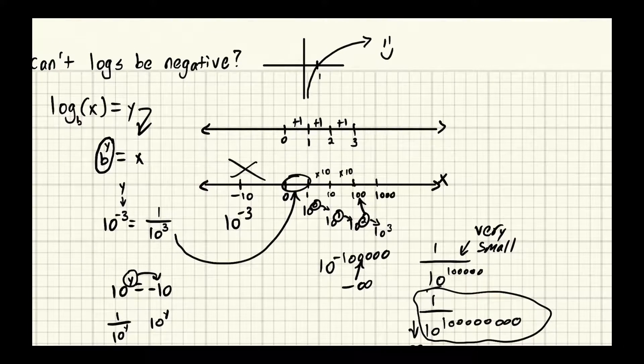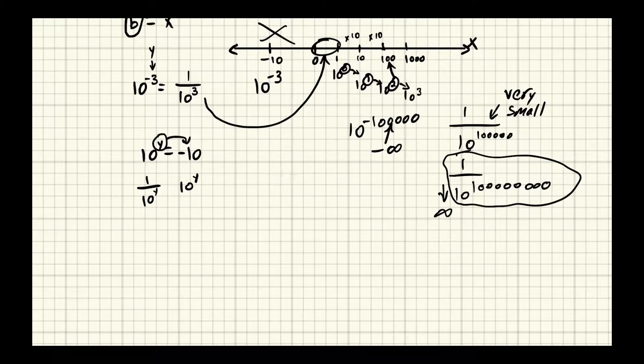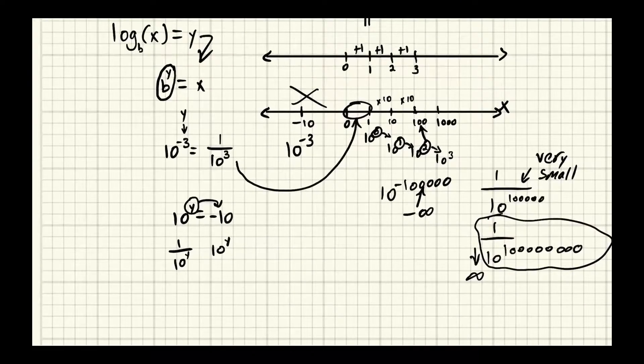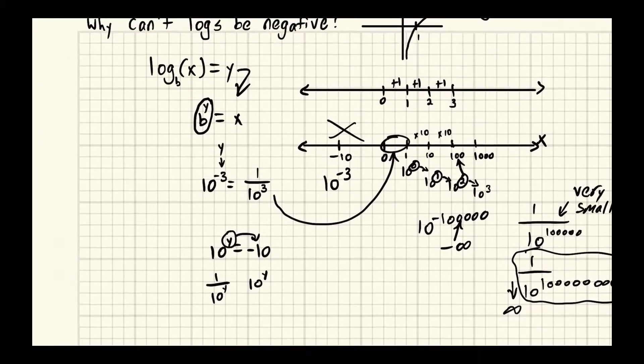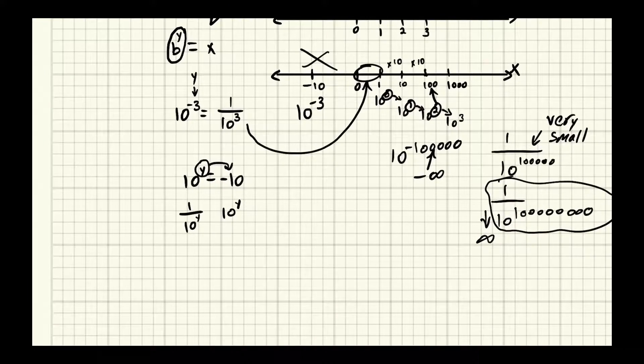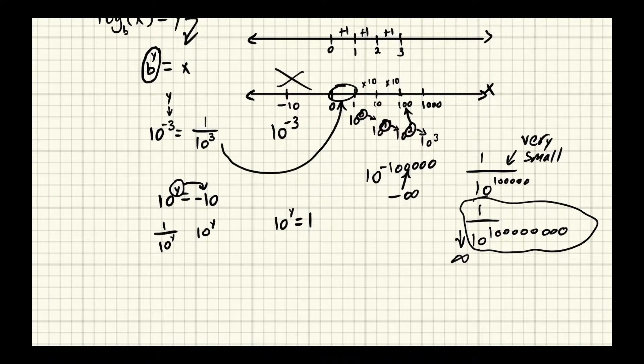Now this one crossing point, it's pretty interesting. According to our relationship here, b to the y equals x. Well we say, if we put b, so we're in base 10, and we're at y, and we make x equal 1, well what value of y will give an x of one?